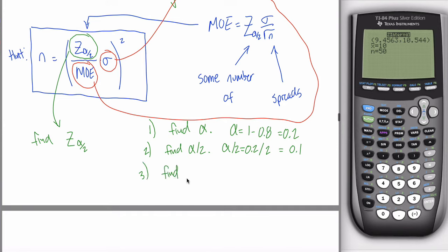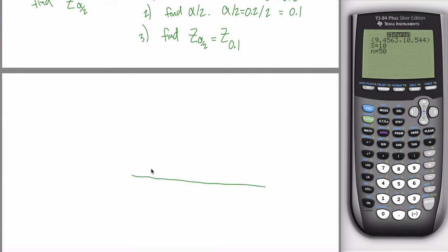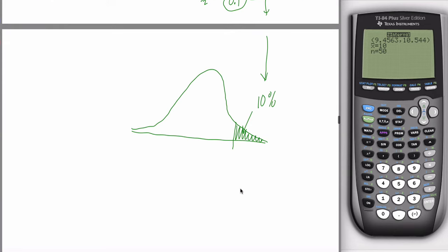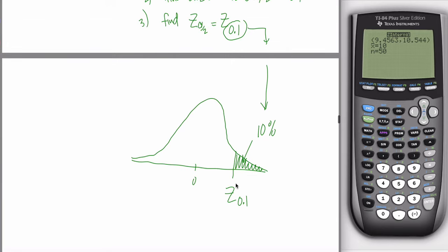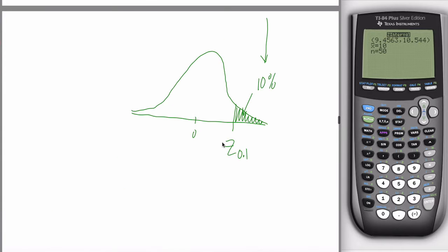Step three: find Z_(α/2). We already figured out that alpha divided by 2 is 0.1, so we're looking for Z sub 0.1. This symbol means: the Z score so far to the right that the area above it is only 0.1 or 10%. I draw this picture with the normal curve and find this value. Why is 0 in the middle? Because this capital Z means a Z score.